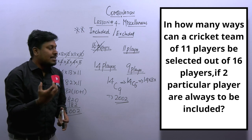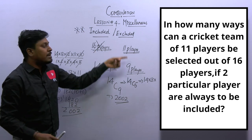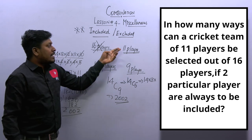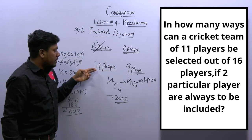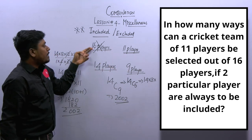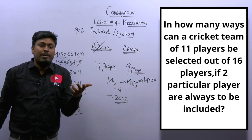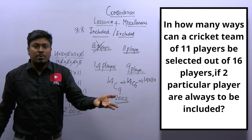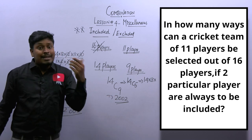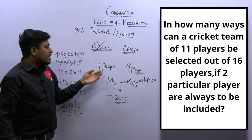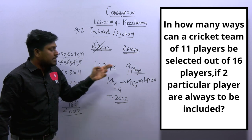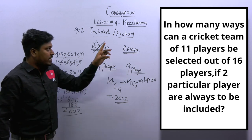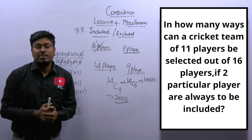This is an easy question — you just need to understand how the 2 players are eliminated from the pool. If 2 players are always included, we select only 9 players from the remaining 14. The captain and vice-captain are always included, so they are already selected. Finally, the answer for question number 5 is 2002.